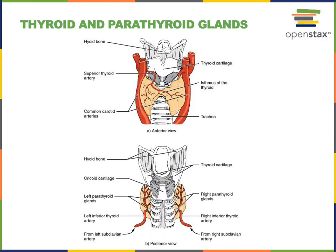The thyroid gland is a butterfly-shaped organ located on the anterior cervical region. It might help to remember that it's similar to the shape and location of a bow tie. There in the front of the neck where you would wear a bow tie is the thyroid gland, which has two larger lobes connected by a narrow isthmus on the midline.